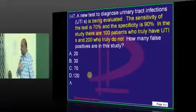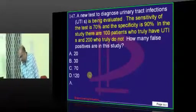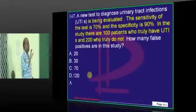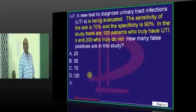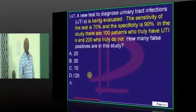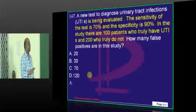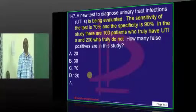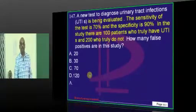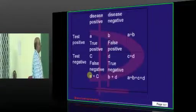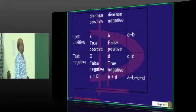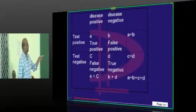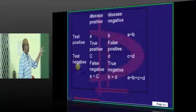Now, a new test is used for diagnosis of UTI. Sensitivity 70%, specificity 90%. We have done a study on 100 patients who really have UTI and 200 who really do not have. Then how many false positives are there in this study? Once more, the idea is to basically put a 2x2 table: disease positive, disease negative; true positive, true negative. Then test positive, test negative.